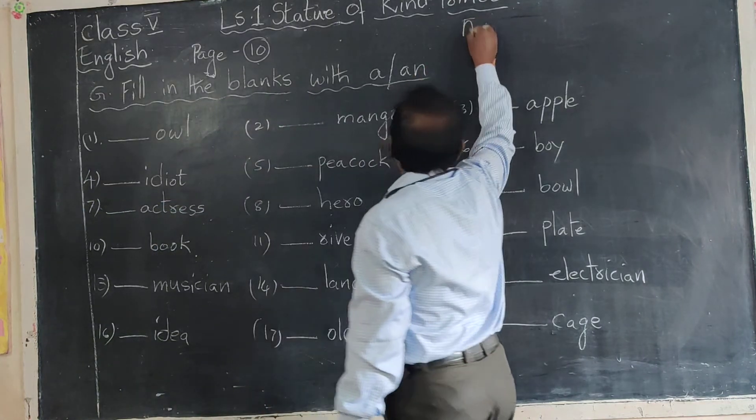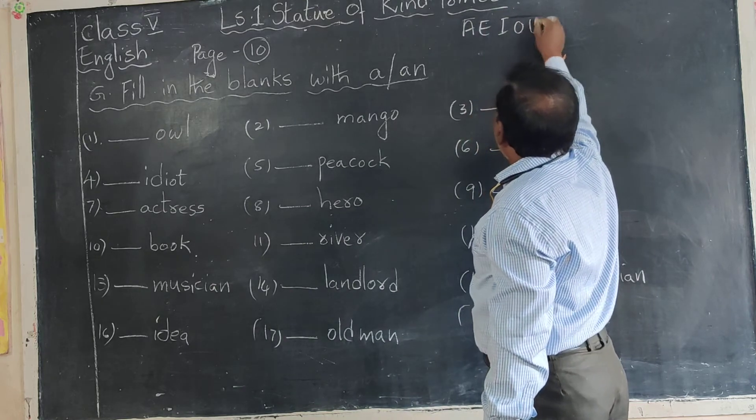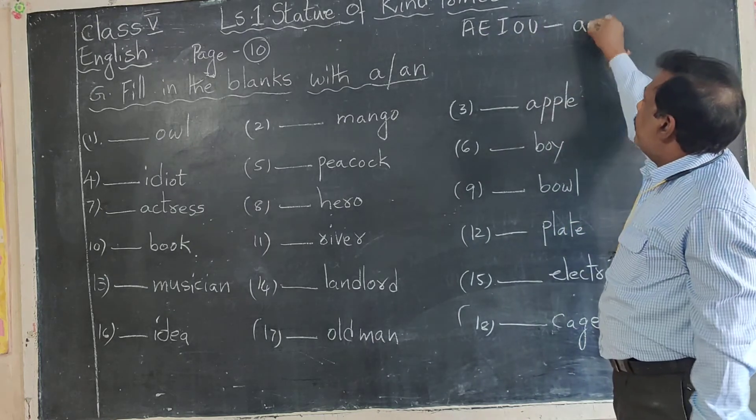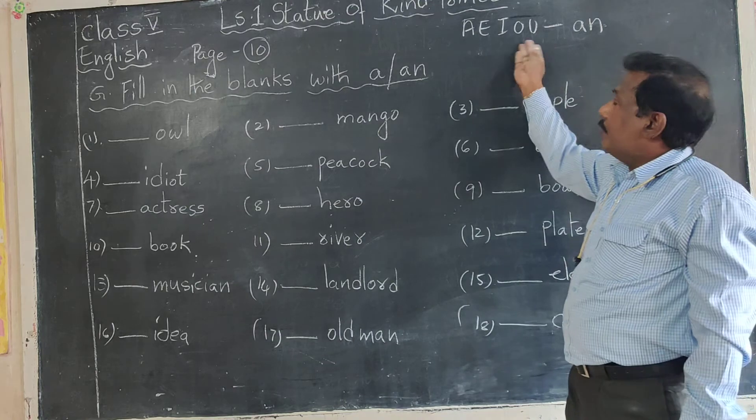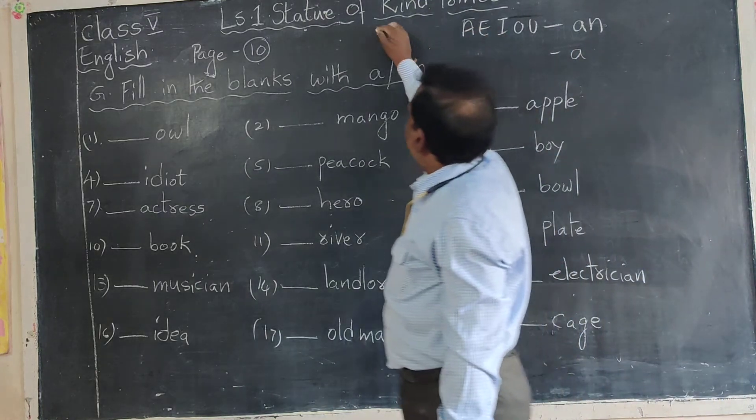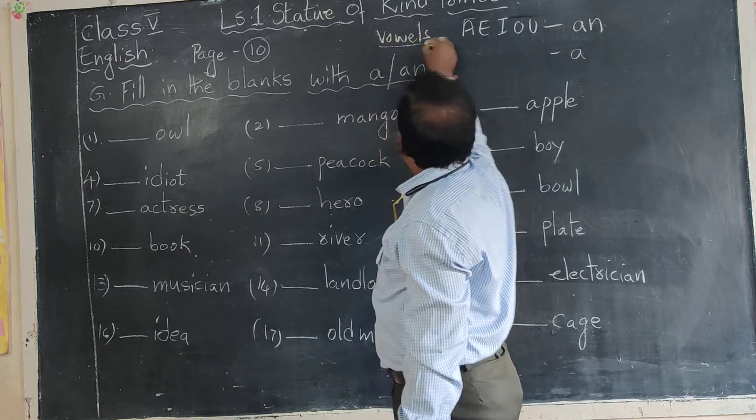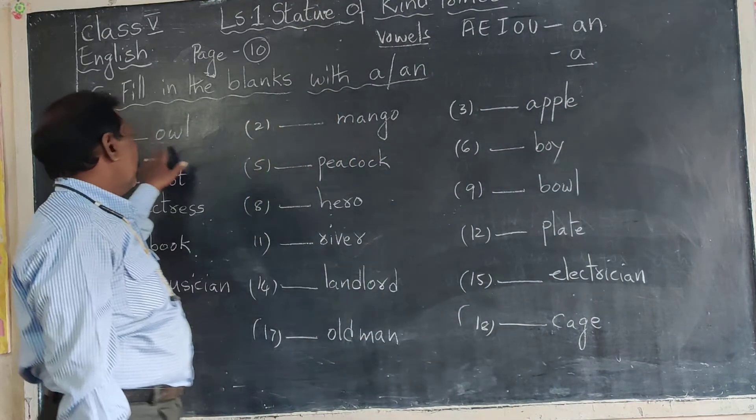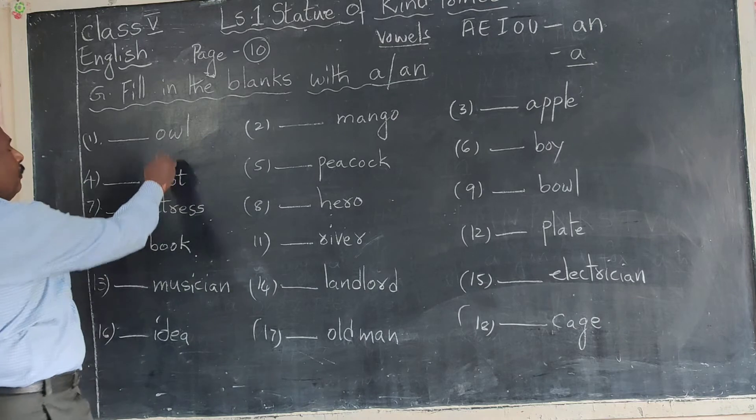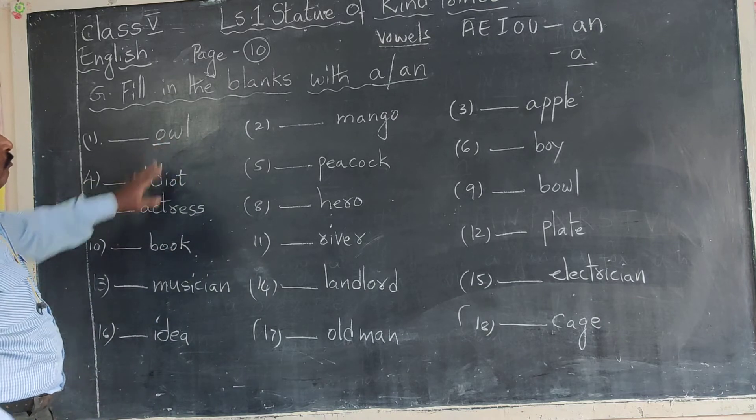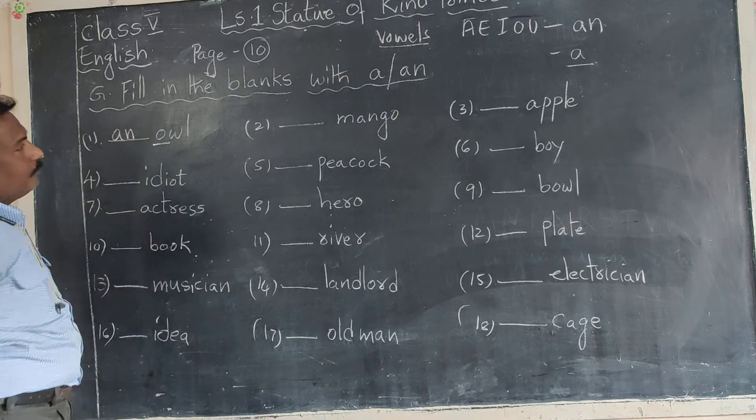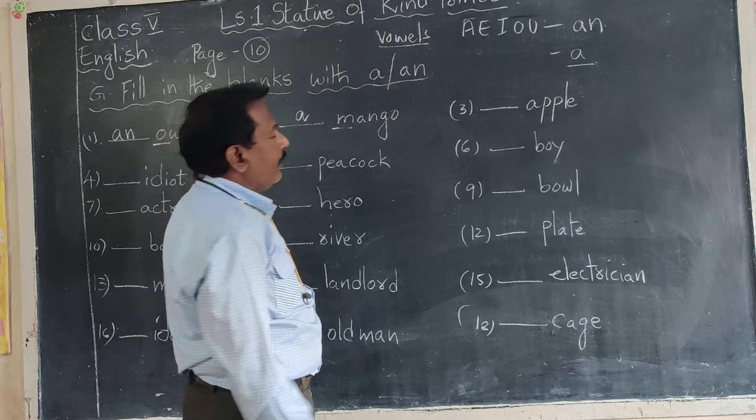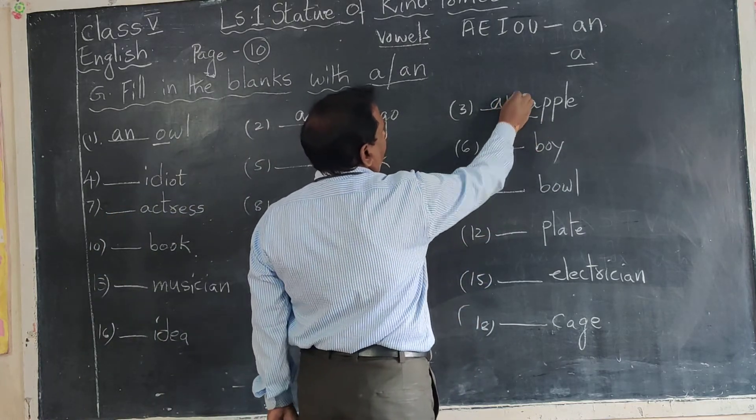Keep in your mind, vowels are A, E, I, O, U. With these letters starting words, we use An. And rest of the words, consonants, we use A. See, when you write it, check the first letter, whether it is consonant or vowel. O is vowel, so we write an owl. M is consonant, a mango. I is vowel, an eagle.